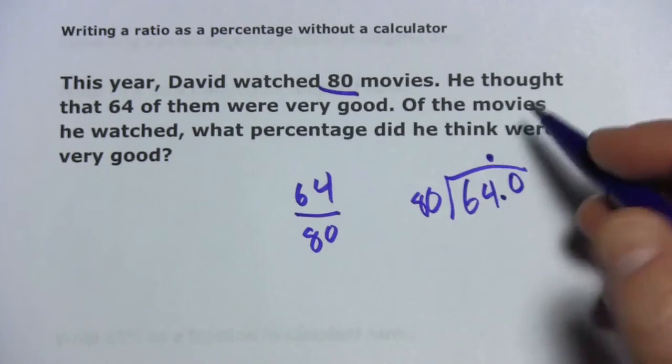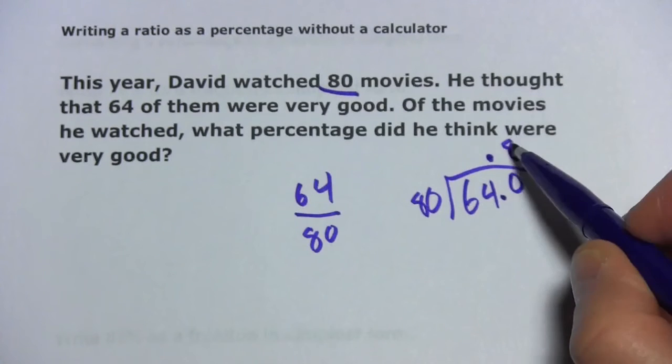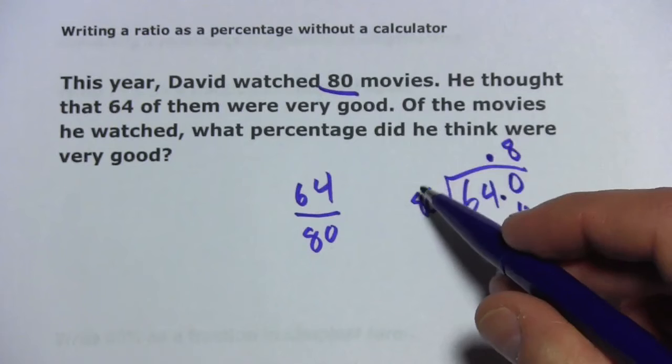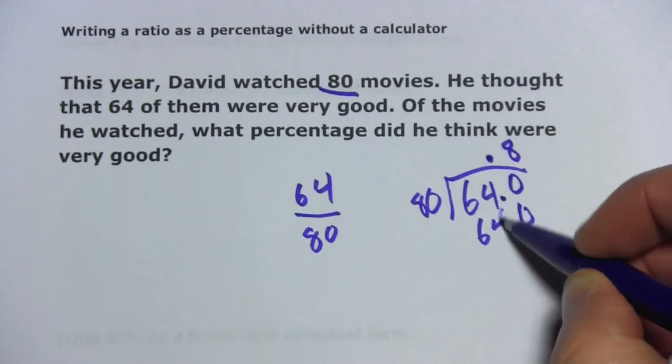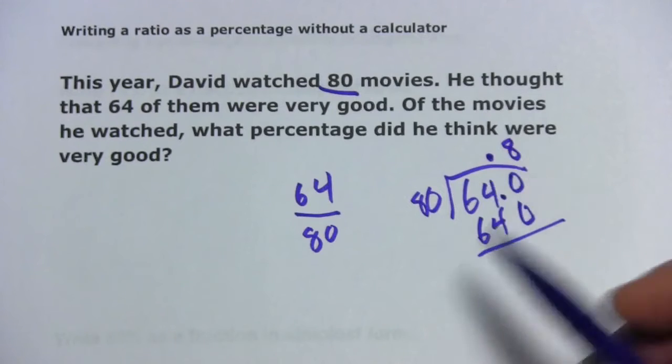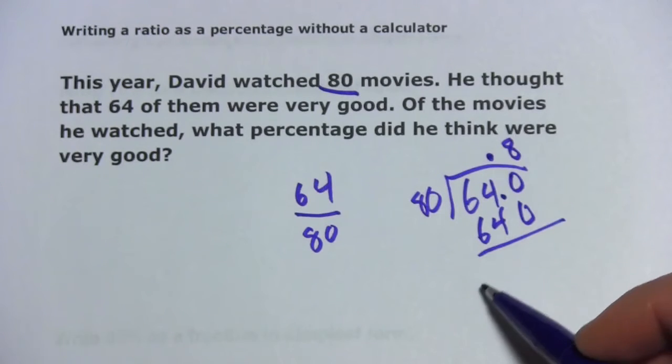I know 8 times 8 is 64. So if I put an 8 here, I would multiply it by the zero. That would go here, and then multiply it by the 8, 8 times 64. Aha! So that came out perfectly. So 64 divided by 80 is 0.8.